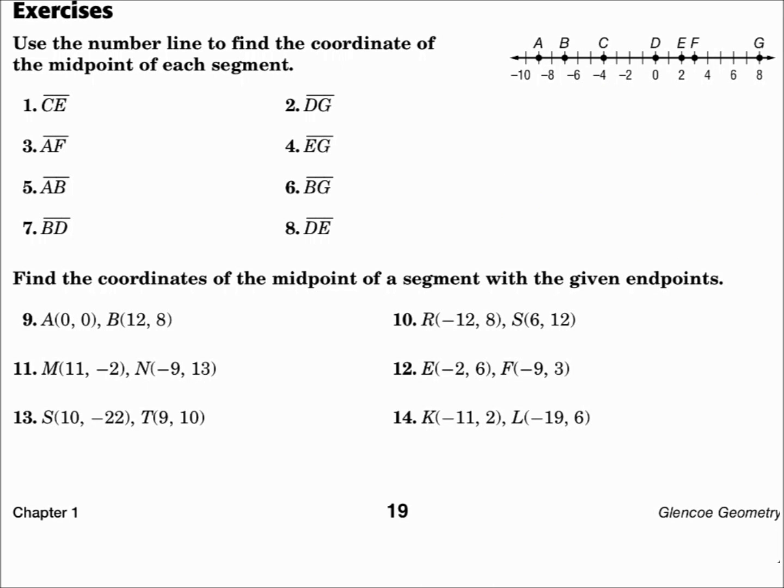Number 2, the midpoint of segment DG. D uses 0, G uses 8. The midpoint is found by adding those numbers and dividing by 2. That's an 8 over 2, which is 4. 4 is the midpoint.